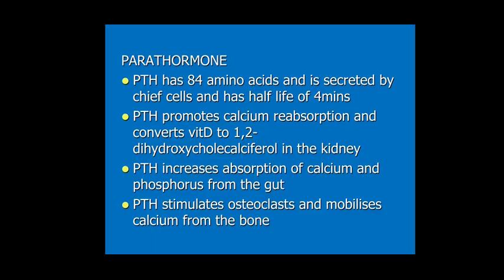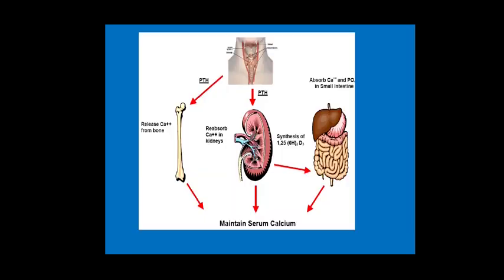Parathyroid hormone has 84 amino acids, is secreted by the chief cells, and has a half-life of 4 minutes. It promotes calcium reabsorption and converts vitamin D to 1,25-dihydroxycholecalciferol in the kidney. It increases absorption of calcium and phosphorus from the gut, and stimulates osteoclasts to mobilize calcium from bone. Overall, parathyroid hormone raises calcium levels via the kidneys, gut, and bone. A diagram depicts the effect of parathyroid hormone on bone, kidney, and GIT.